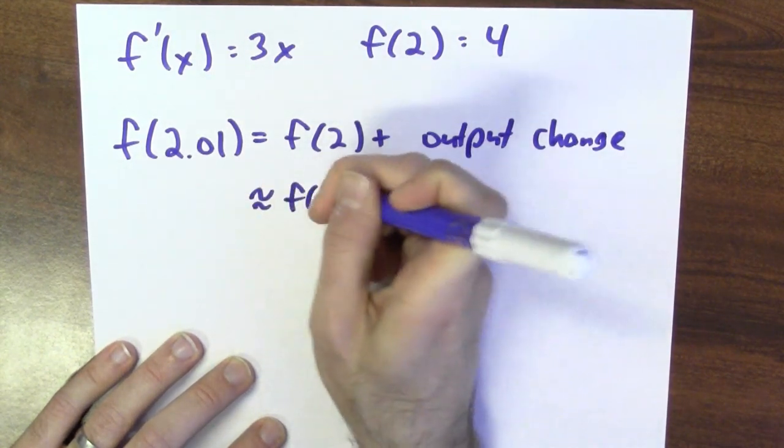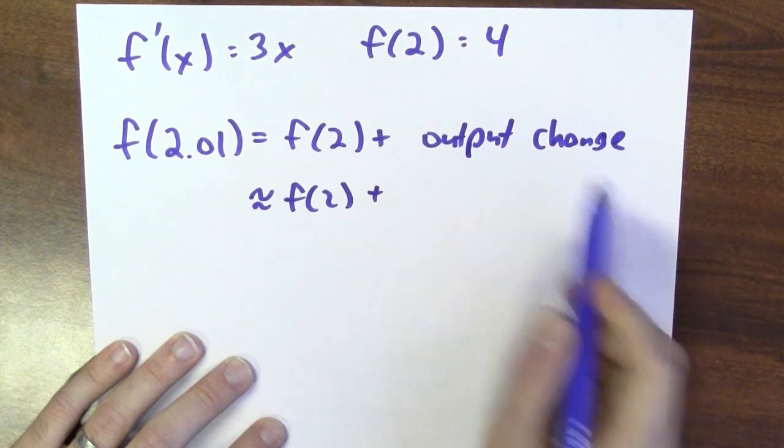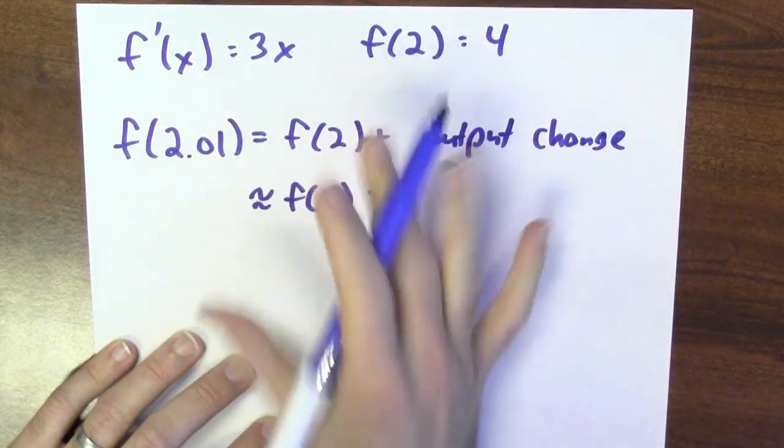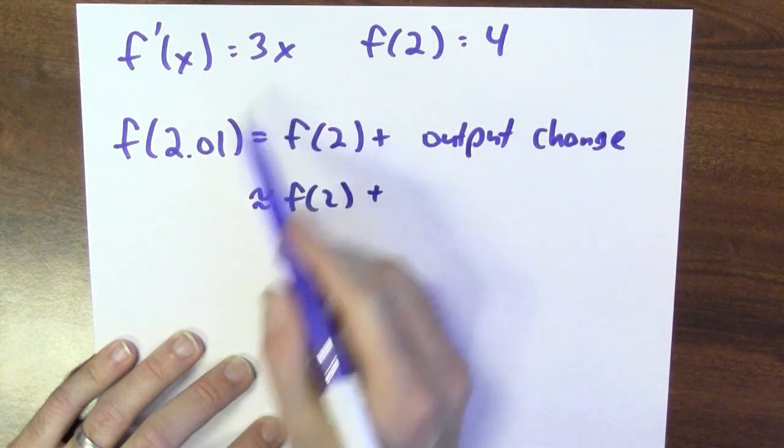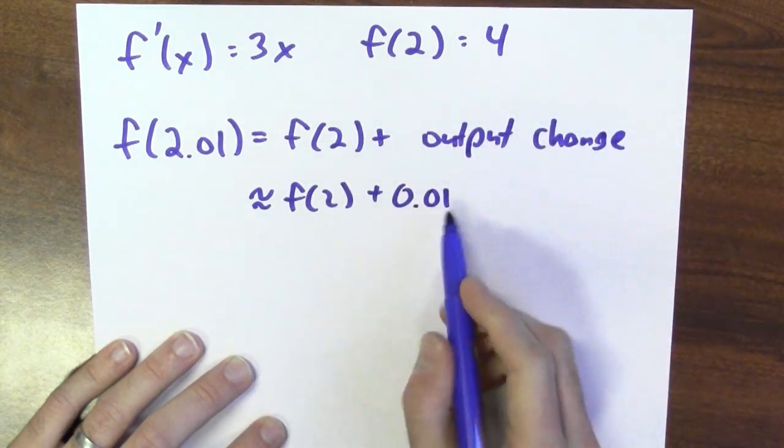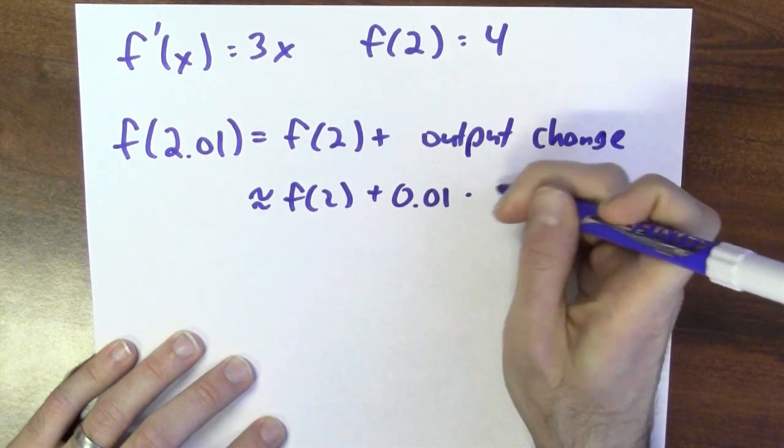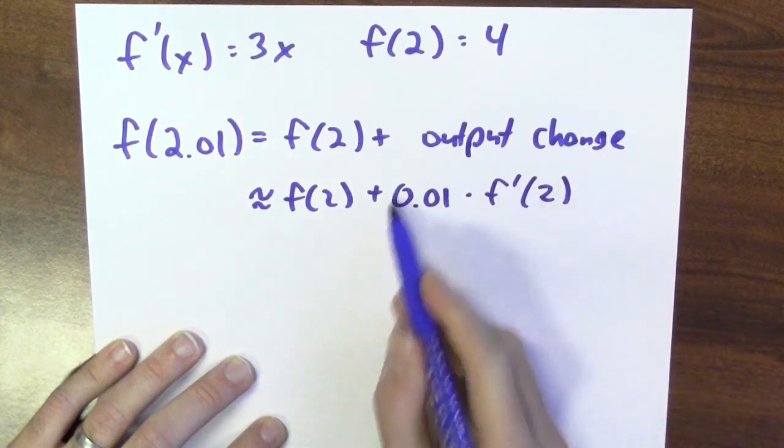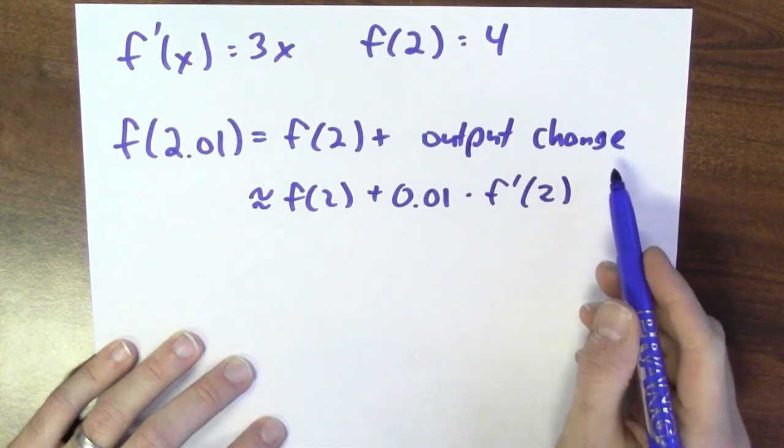Well, the output change is approximately something that I can compute from the derivative. Right? The derivative is infinitesimally the ratio between output change and input change. So, if I multiply by how much I change the input by the ratio of input change to output change, this should be approximately the true output change.